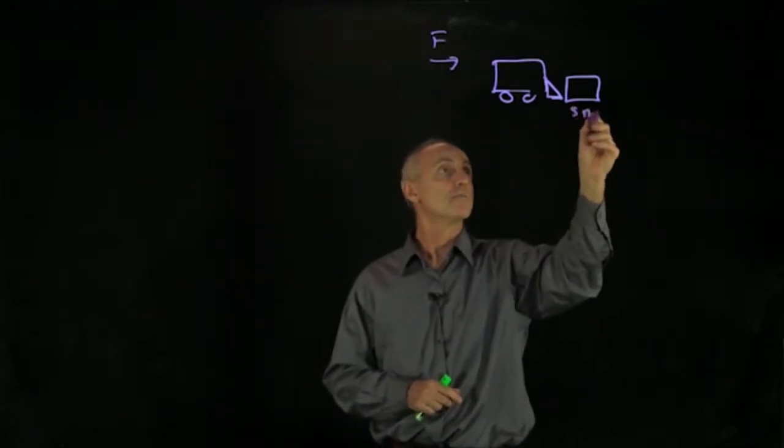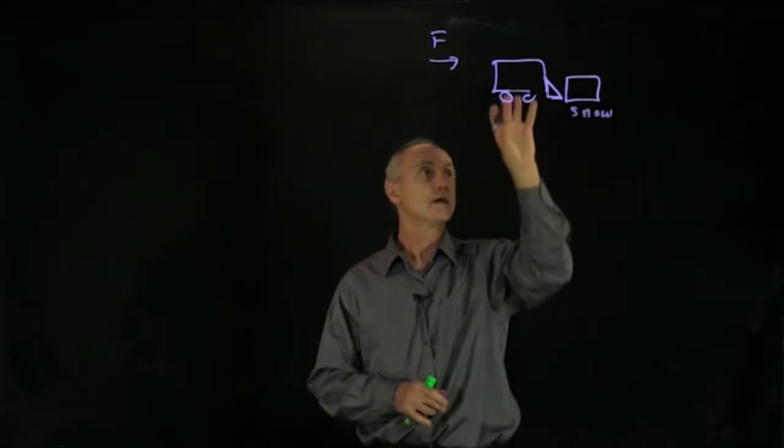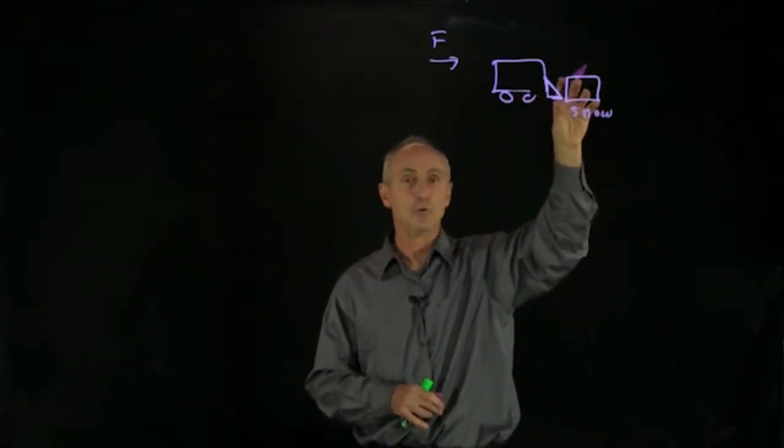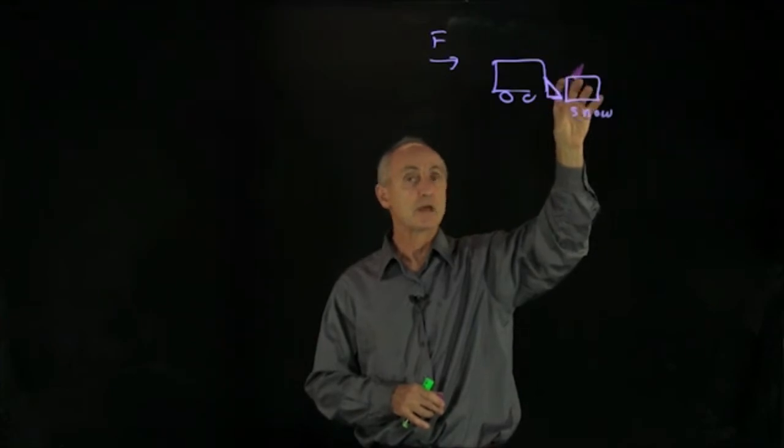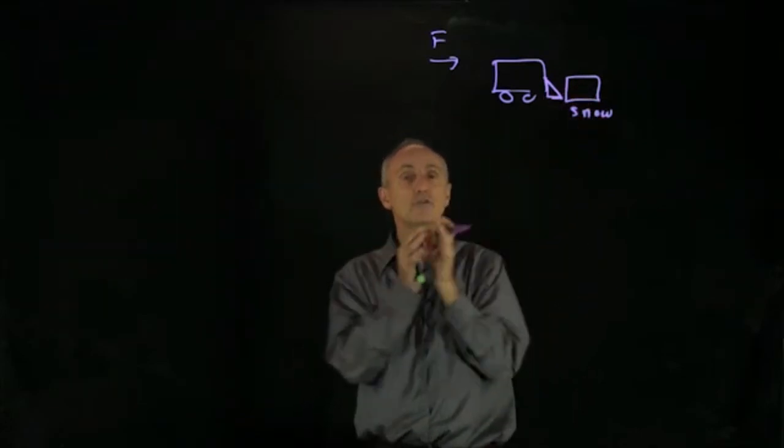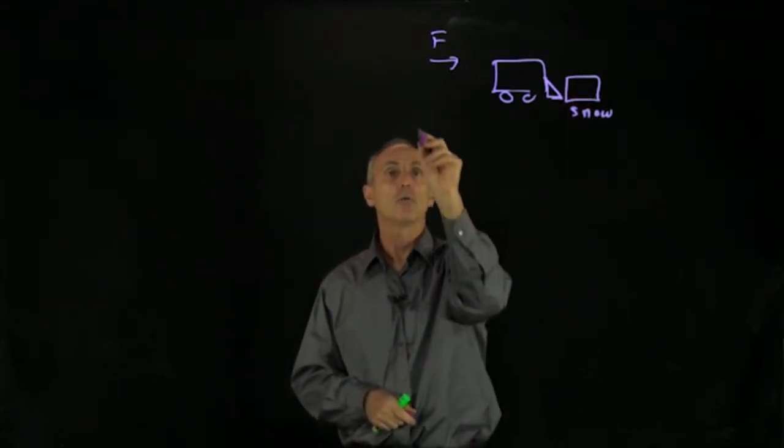And this is our snow. What's happening in this problem is that the truck picks up the snow, which is at rest initially, gets the snow up to the speed of the truck, and then the snow falls off the plow. So how do we model this problem? Well, let's look at our situation at time t.